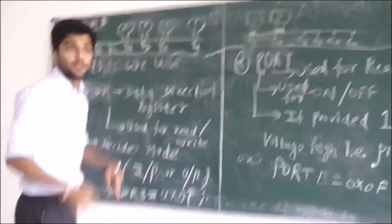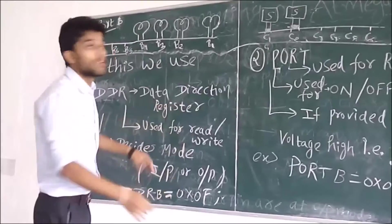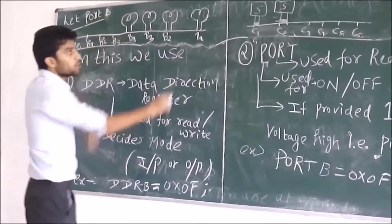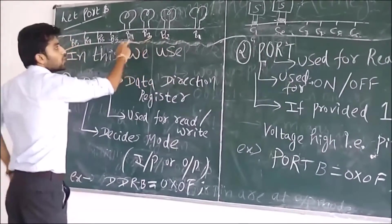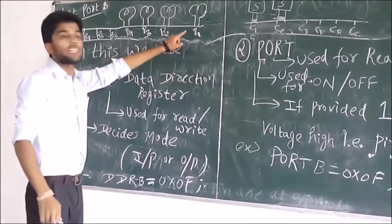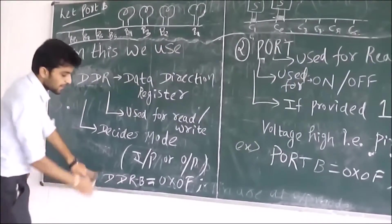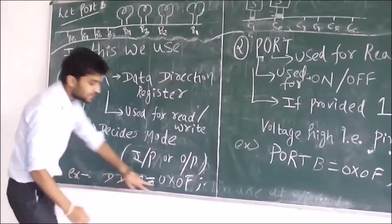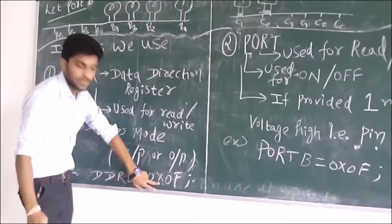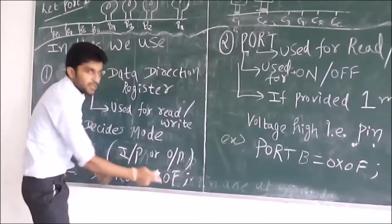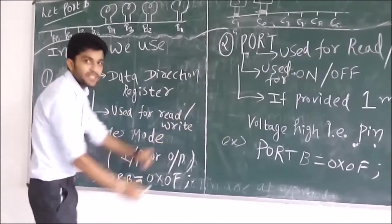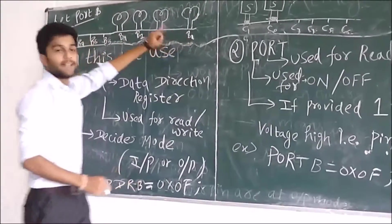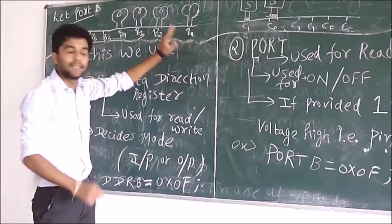So, how you will do? For output mode, you should provide 1 to each pin. So, it can be represented as DDRB equals 0x0F. 0 means 0000 four times, F means 1111 four times. It means it is in output mode.